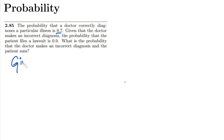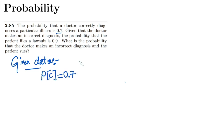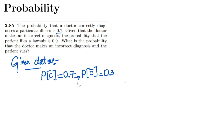In the given data, let me represent the correct diagnosis with C, so the probability of C is 0.7. We can also find the incorrect diagnosis, which is C complement. We subtract P(C) from 1: 1 minus 0.7 is 0.3. So the probability of incorrect diagnosis is 0.3.